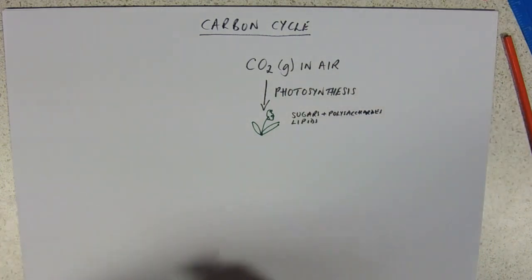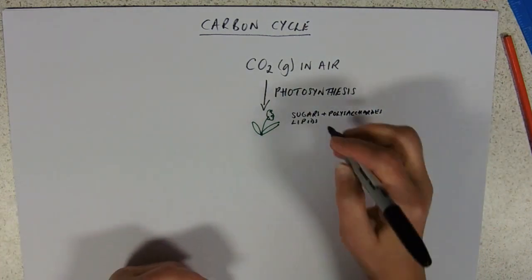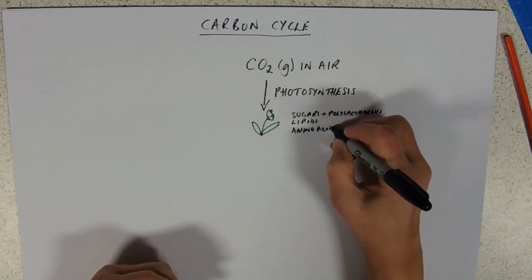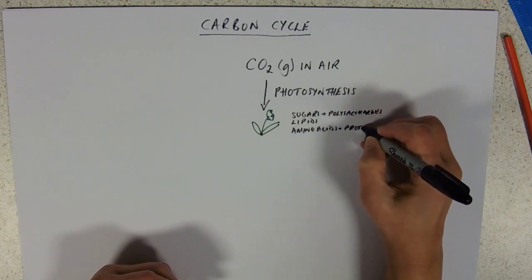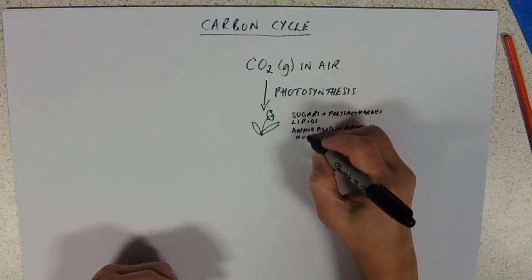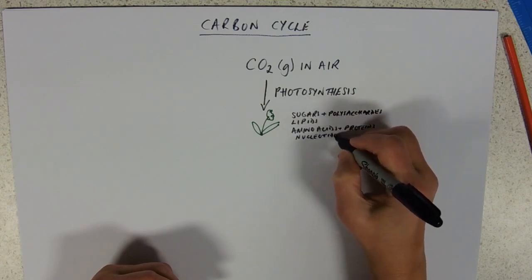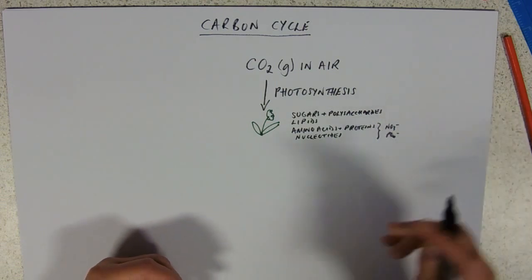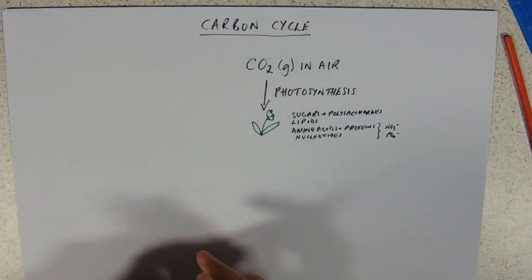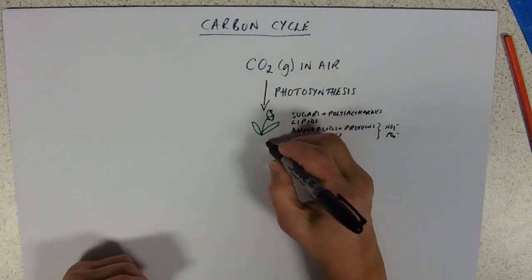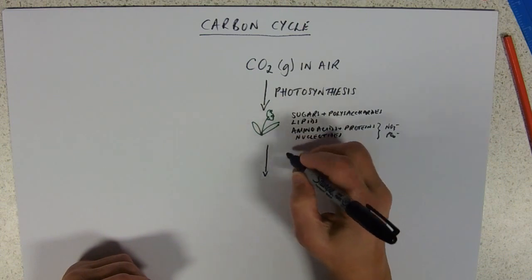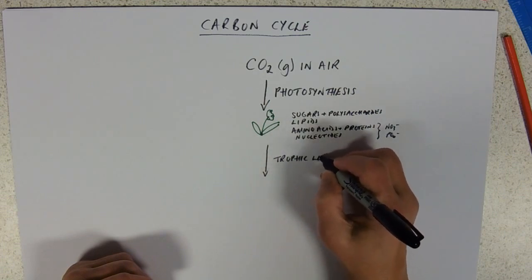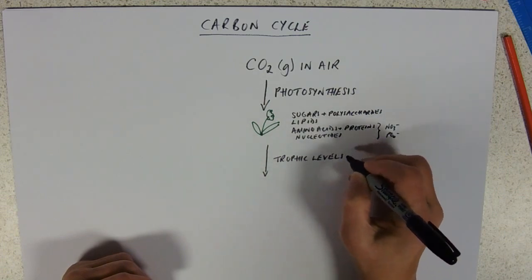And, of course, with the addition of nitrogen, we can also make amino acids and proteins. And nucleotides, so those require nitrates and phosphates. And then, those things are passed on down food chains. So, they're passed on through the trophic levels. And the energy flow.